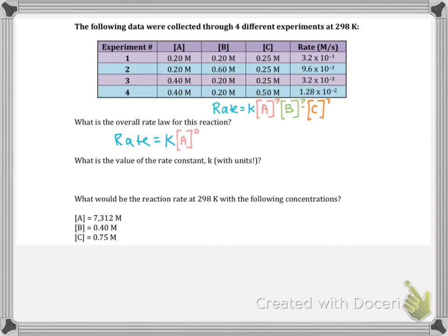So now we want to look for the reaction or the two experiments where only B changes. And so I think that's going to be experiment 1 and 2. So we triple the concentration of B while A and C stay the same. And the rate also triples. So when the concentration and rate change by the same factor, it's going to be first order.